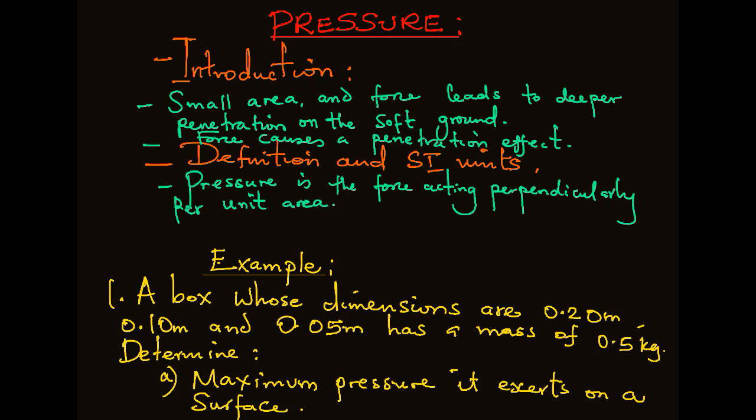From the definition, pressure P is equal to force F over area A. Force is measured in newtons. Area is measured in square meters. And therefore the SI unit of pressure is given by the SI unit of force divided by the SI unit of area, which is newton per meter squared.